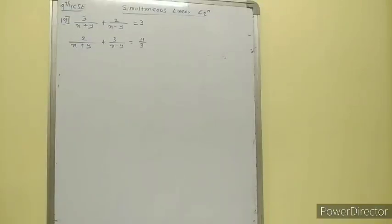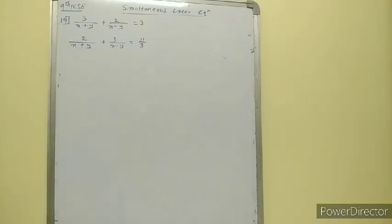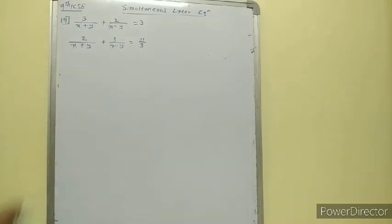Now students, we will start with the 19th sum of exercise 5A. Again in these two equations, we have variables in the denominator, that is x plus y and x minus y.